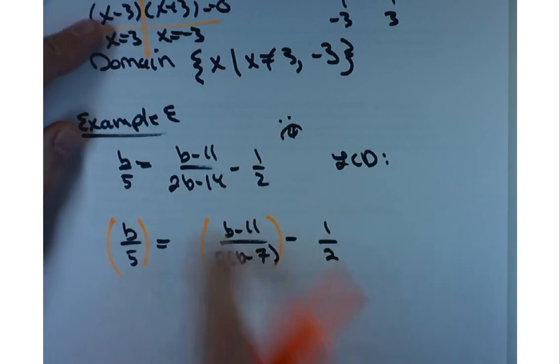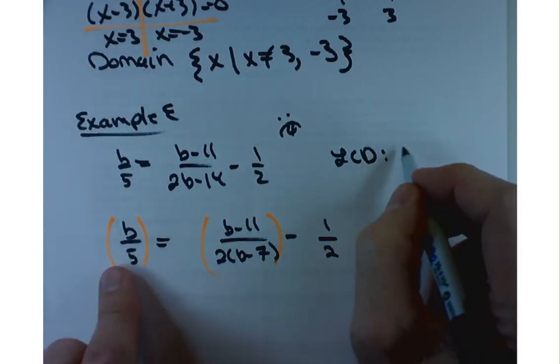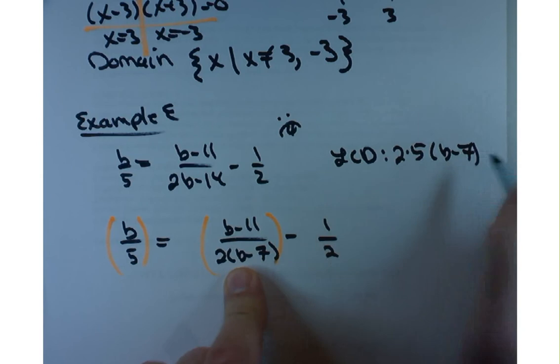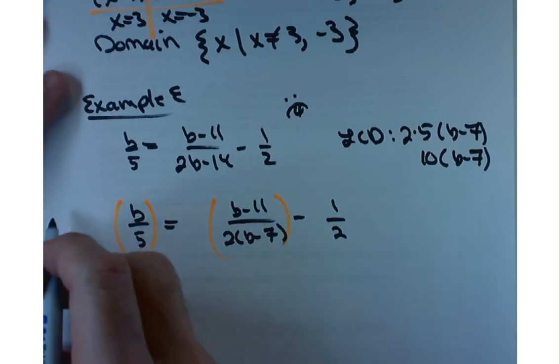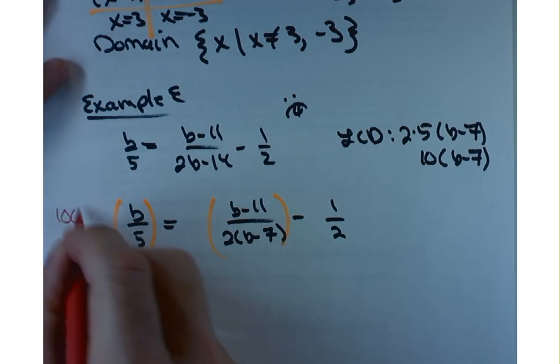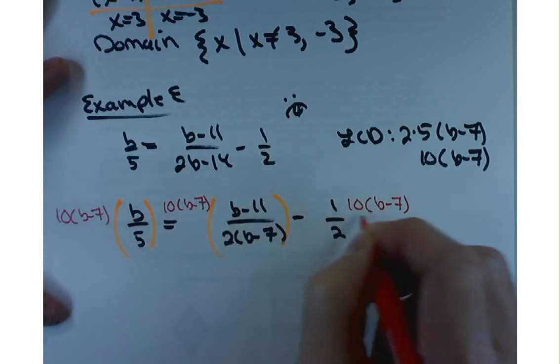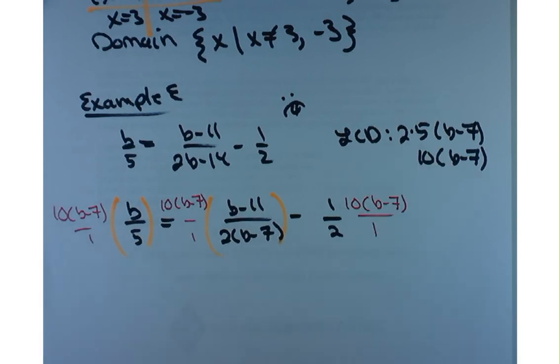Now, to determine the LCD, you're going to factor. And so, let's take a look at the terms I need as part of my LCD. I have a 5 and a 2. So, a 2 times a 5 and then a B minus 7. So, in other words, 10 times B minus 7. That's my LCD. So, I'll multiply everything through by that LCD. So, let me do it this way. 10 times B minus 7. 10 times B minus 7. And 10 times B minus 7. Notice I'm just multiplying the numerators. The reason I can do that is because, effectively, I'm multiplying both sides of the equation by that LCD. This is going to get rid of the denominators.